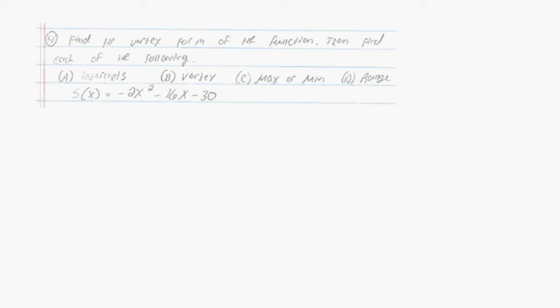Let's look at problem number four. We want to find the vertex form of the following quadratic function, and then we want to find intercepts, vertex, max or min, and range. So let's do that.